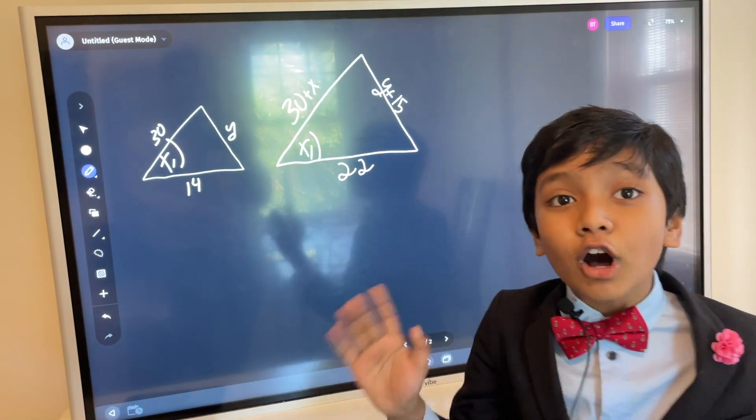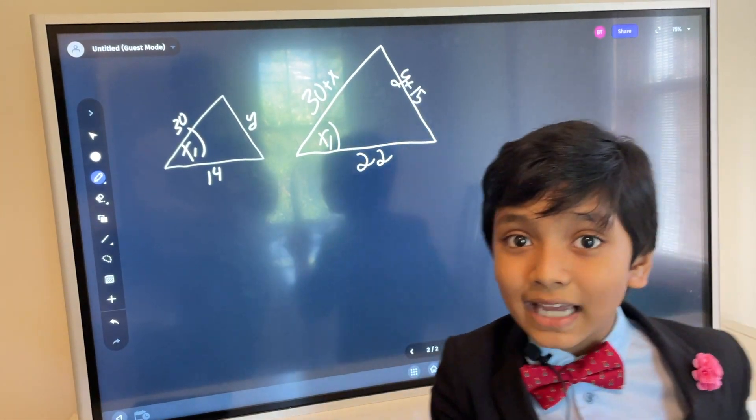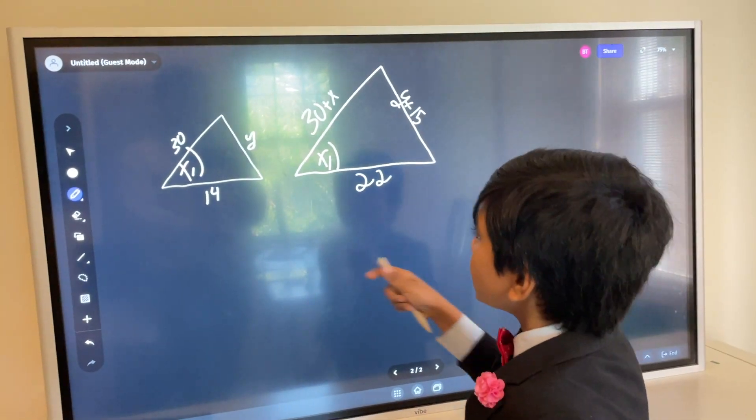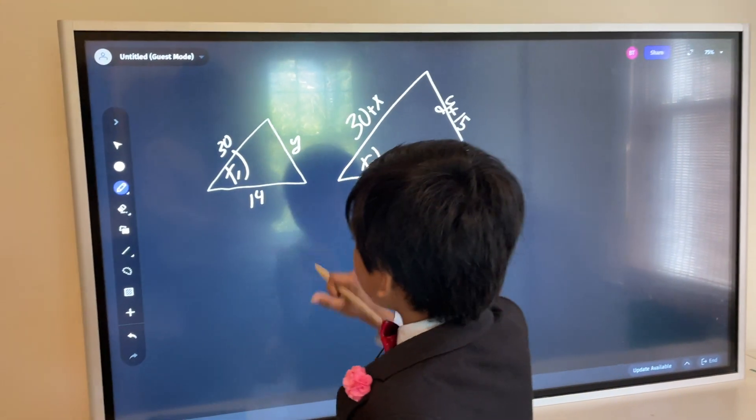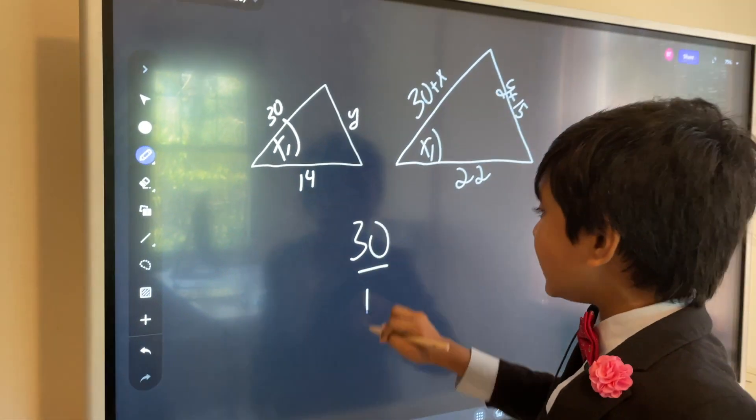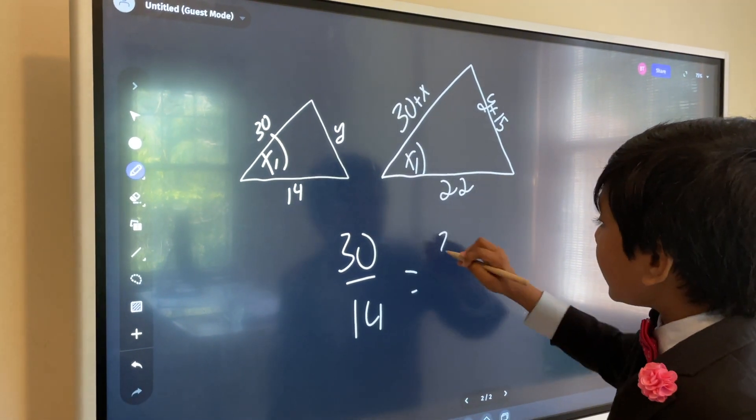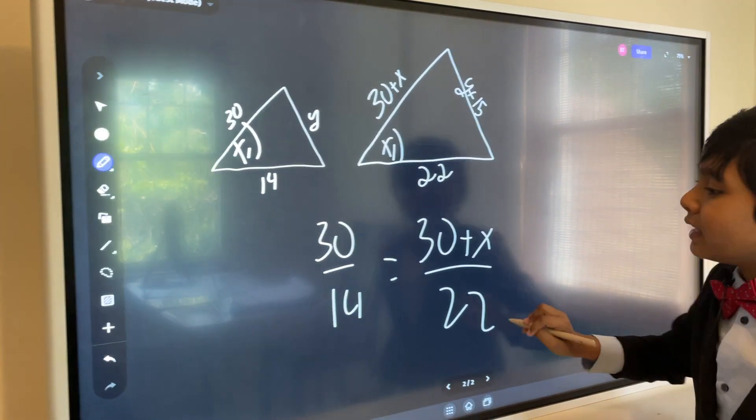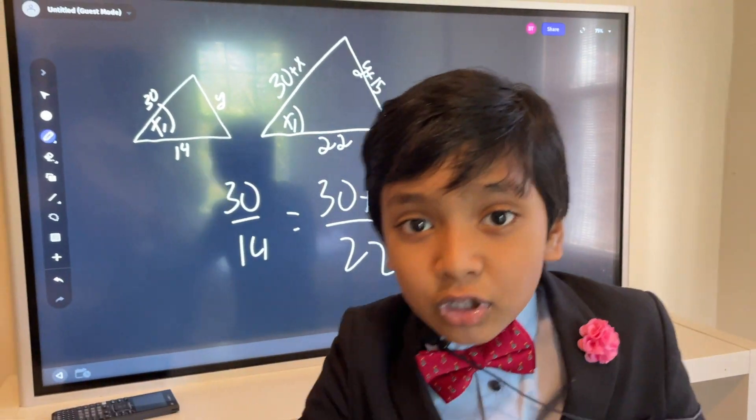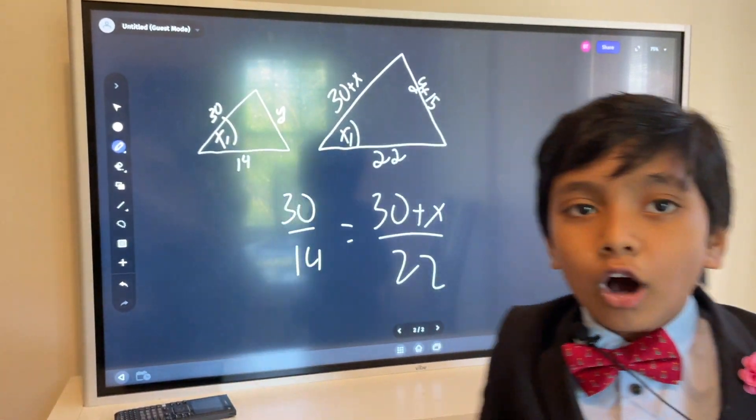Alright, now, how can we solve this problem? First, we need to set up the proportion. That means, the 30 over 14, as 30 plus x is to 22. Understand now? These two factors are similar. They are equal!